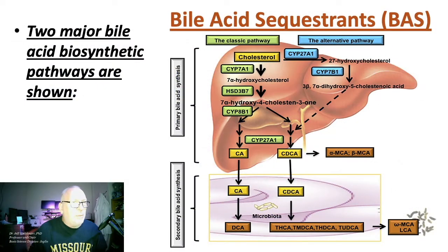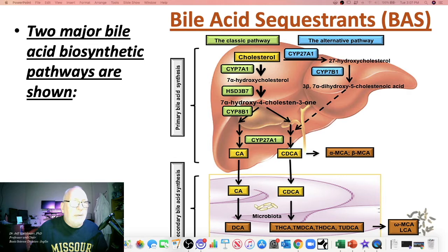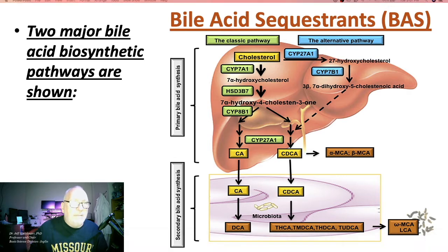There are two major bile acid biosynthetic pathways. The most important point is that the only way cholesterol can get out of the body is through its conversion to cholic acid and chenodeoxycholic acid. To summarize, there are two pathways for bile acid to exit the body, but they both involve conversion of cholesterol to bile acid.